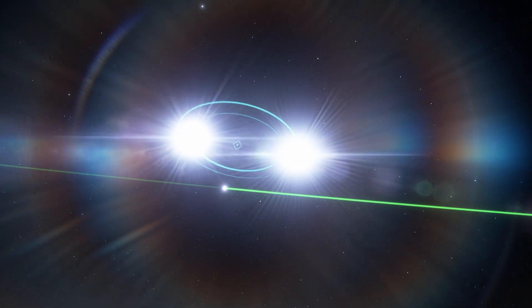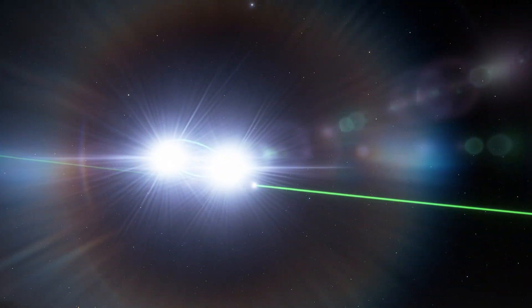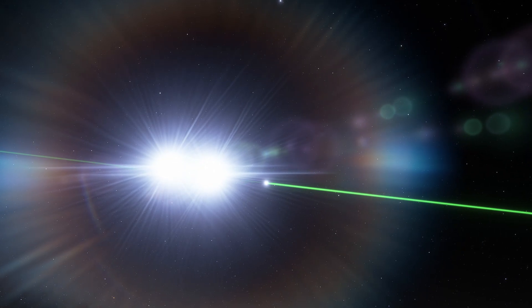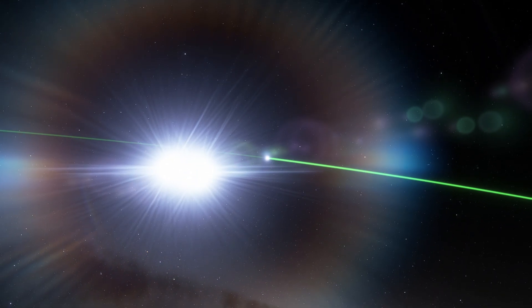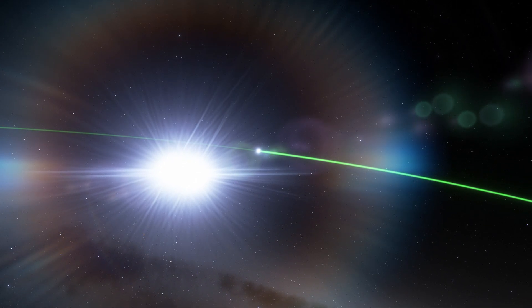The binary star system contains two massive objects, either a neutron star or a black hole, which orbits a companion star with a mass of nearly 20 times that of the Sun.